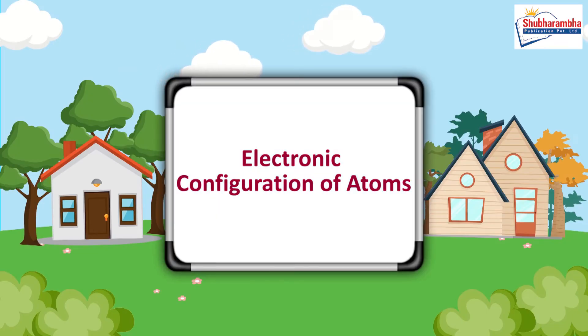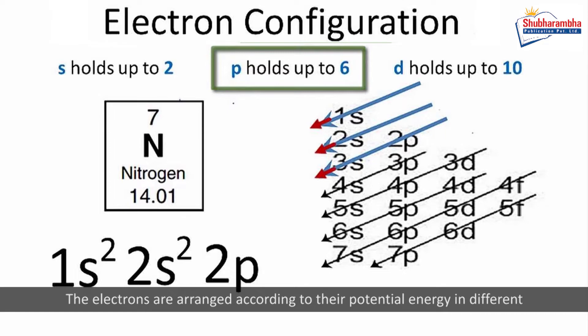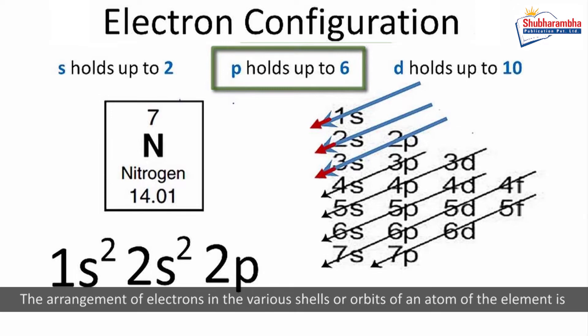Electronic configuration of atoms. The electrons are arranged according to their potential energy in different energy levels or shells or orbits. The arrangement of electrons in the various shells or orbits of an atom of the element is known as electronic configuration.